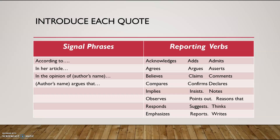Those signal that the quote's coming, and then you can use all of these other verbs to talk about what the person says. Do they agree? Do they point out? Do they suggest? Do they emphasize? The key is variety. You don't want to use 'according to' in every sentence, and you don't want to use the word 'argues' every time. This might be something you think about in the revision stage, but keep in mind that you want to introduce each quote and ultimately try to do so with nice sentence variety.